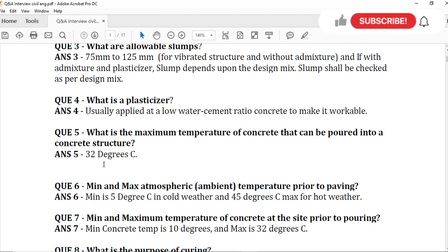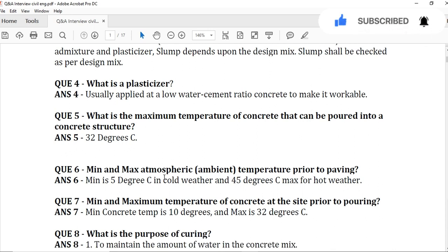Question number 6: Minimum and maximum atmospheric or ambient temperature prior to paving is 5 degrees Celsius in cold weather and 45 degrees centigrade maximum for the hot weather.